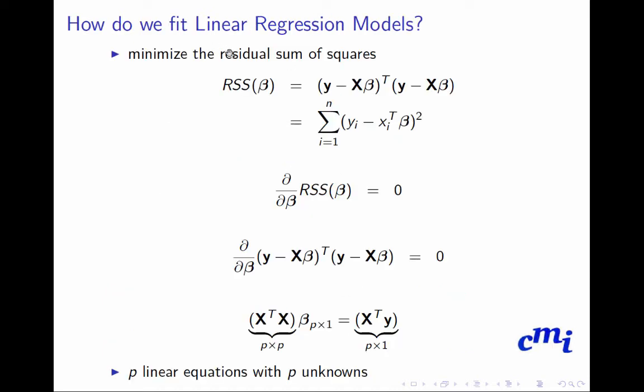So how do we fit a linear regression? Basically, you take the residual sum of squares of beta, differentiate with respect to beta, and equate to 0. This is a null vector of order p. Then you differentiate y minus x beta transpose times y minus x beta.